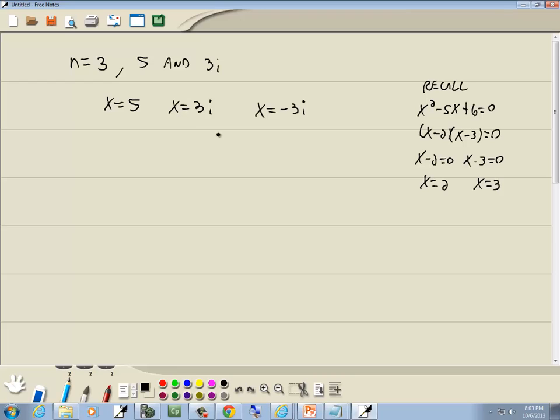This problem is going in reverse. So we're starting down here. We've got the x values, and we want to work our way back up to get the polynomial. Well, if I went from this step to this step, it looks like I get everything over one side, 0 on the other.